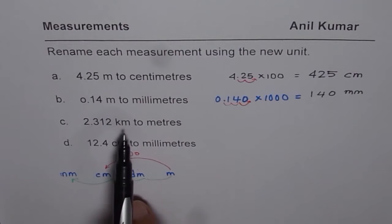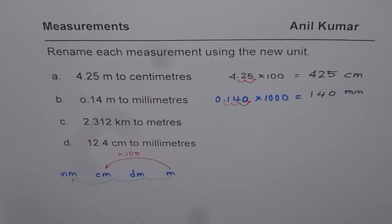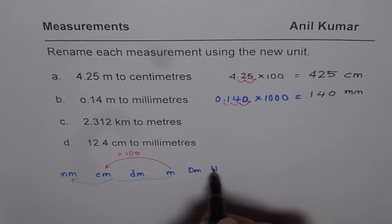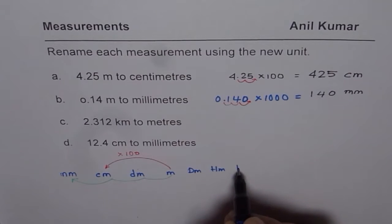Let us do kilometers to meters now. Kilometers is a unit which is much bigger than meters. So we have meters, decameter, hectometer, and kilometer.